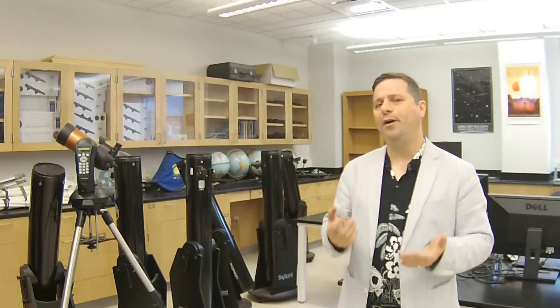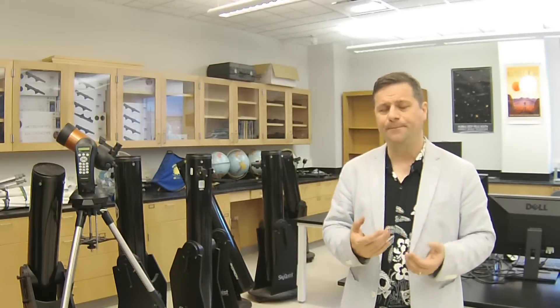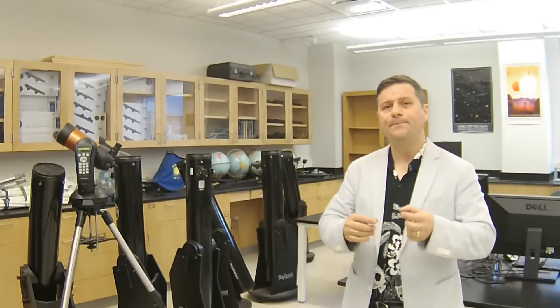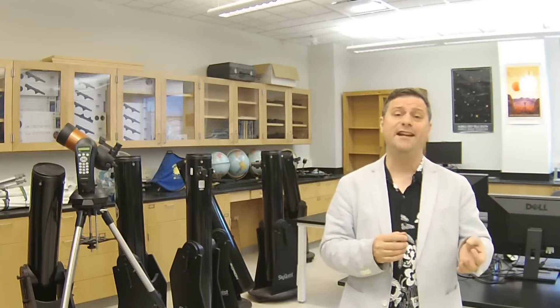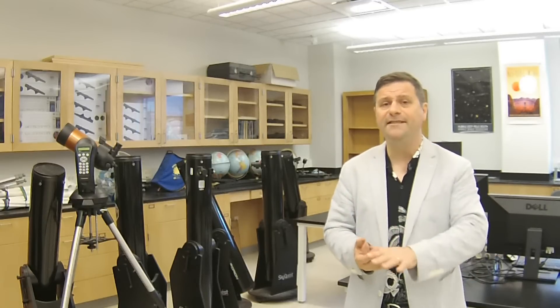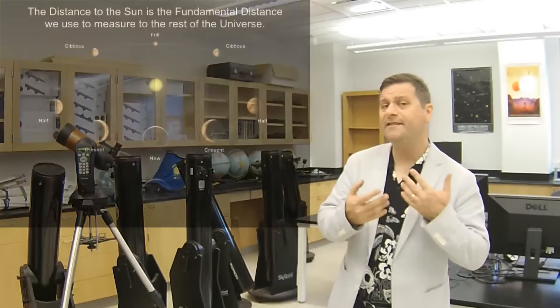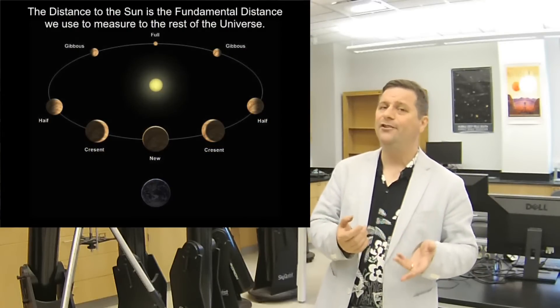One of the key pieces of the parallax distance is we have to know the distance to the Sun. The parallactic distance is so incredibly dependent upon the distance to the Sun. Because without the distance of the Sun, we'll never get the distance to the stars.